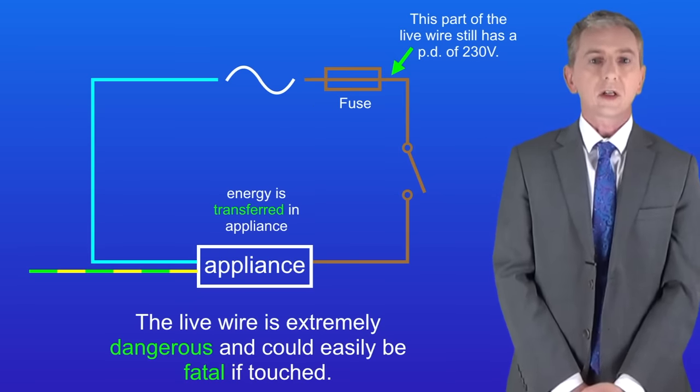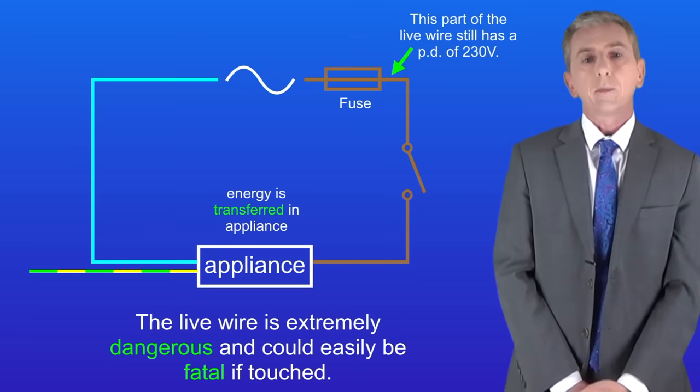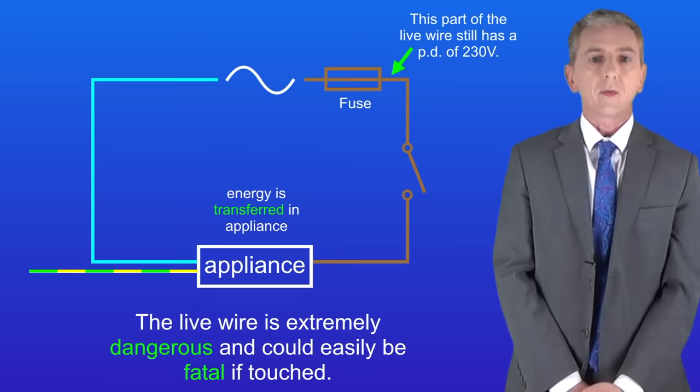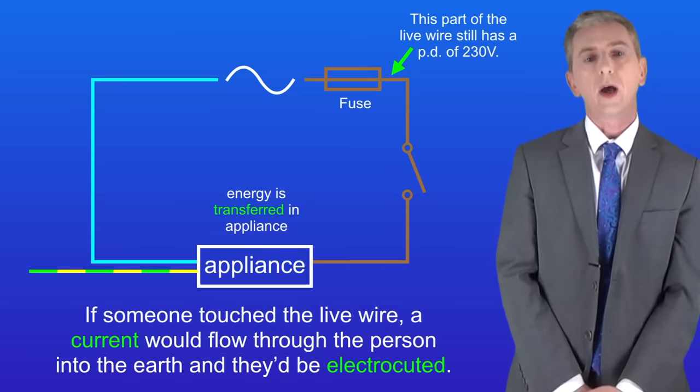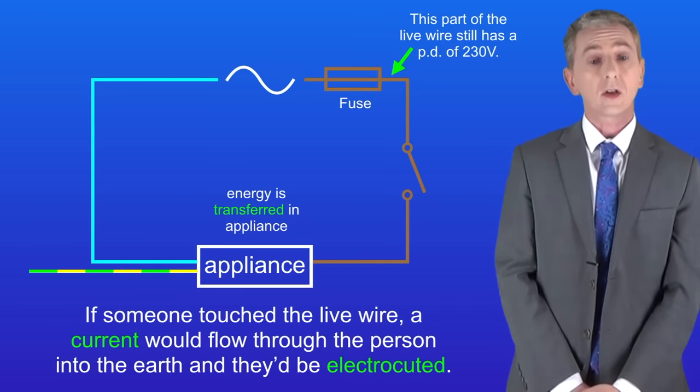Now the potential difference of the earth is zero volts and by the earth I literally mean the ground that you're standing on. So if someone touched the live wire a current would flow through the person into the earth and they'd be electrocuted.